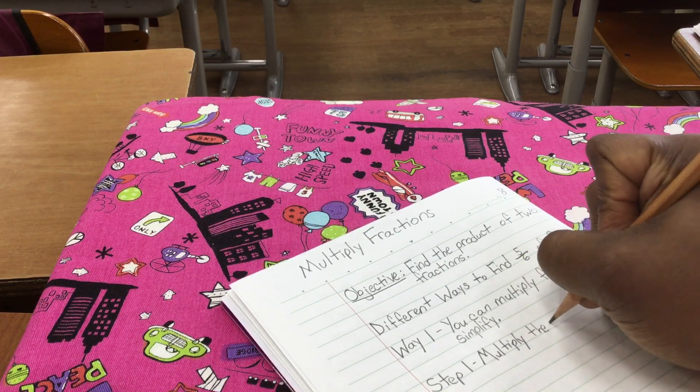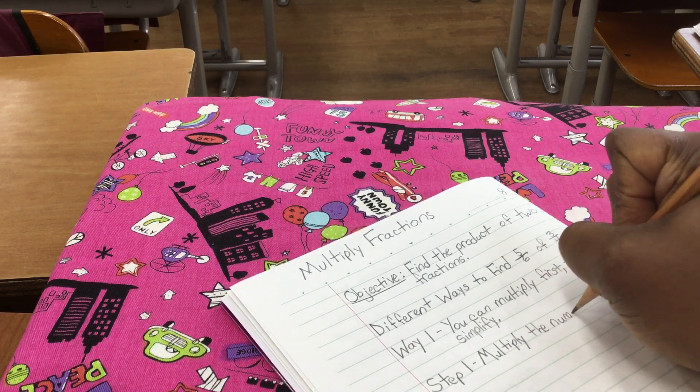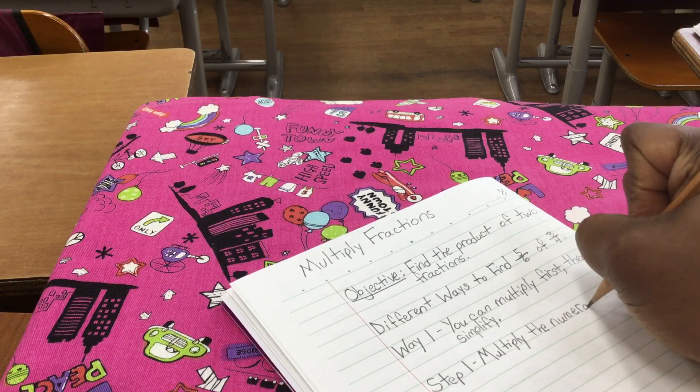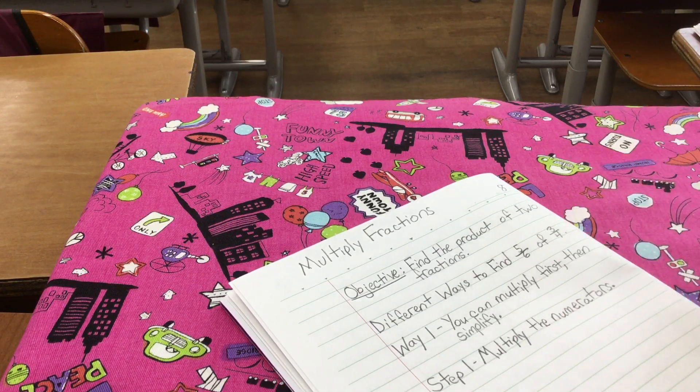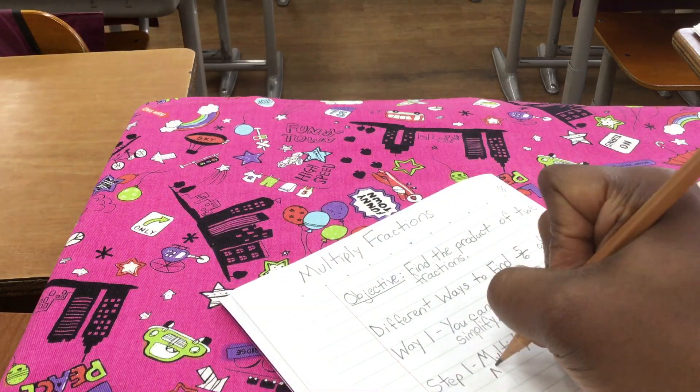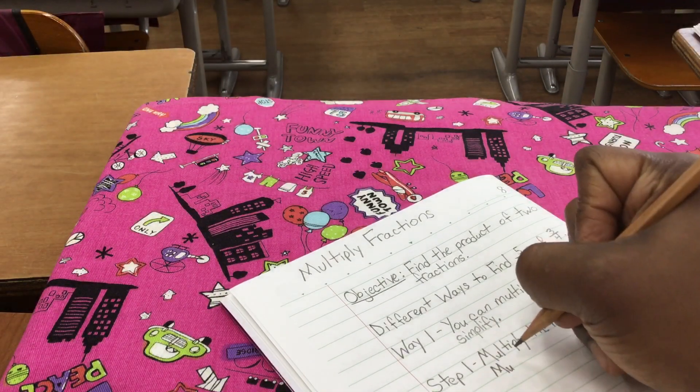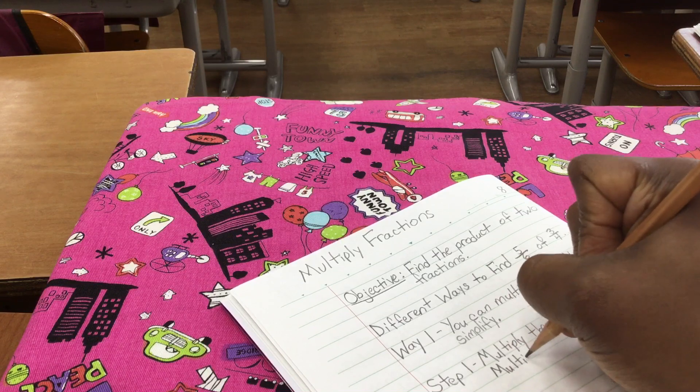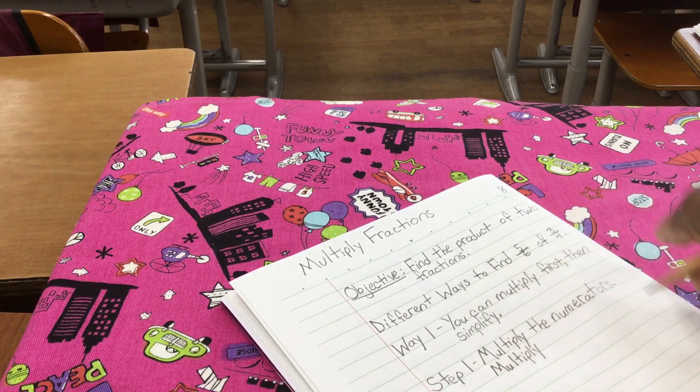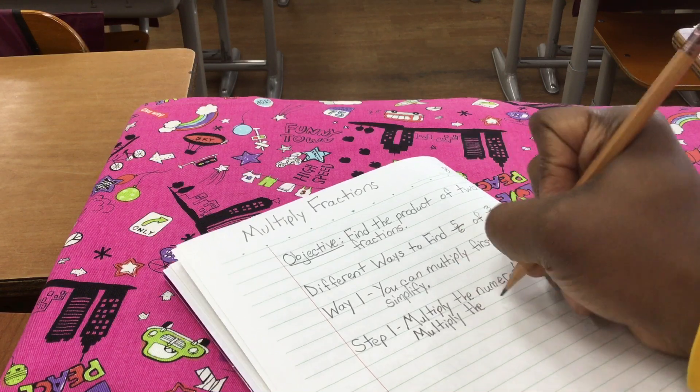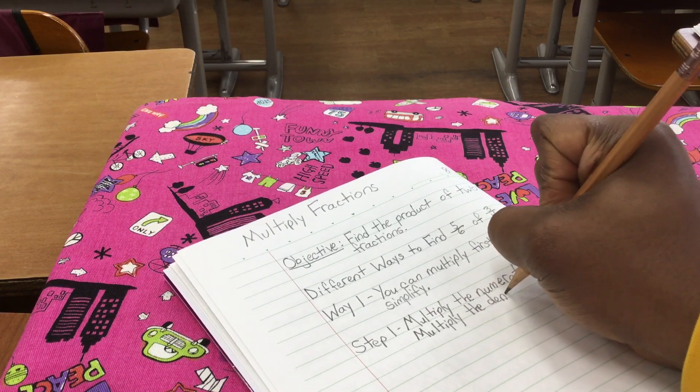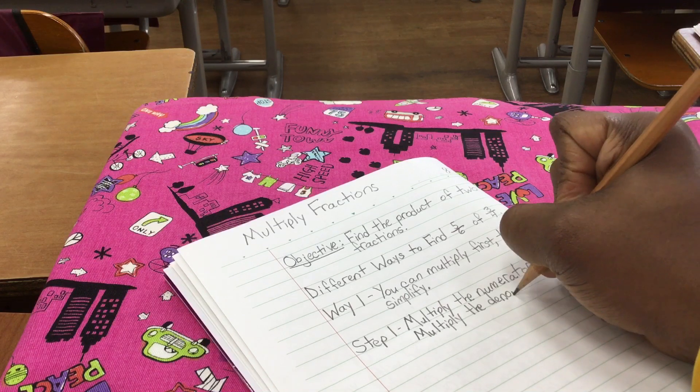You can multiply first, then simplify. Let's do it in steps. So we have step one. Then, you want to multiply the numerators. So remember, the numerators, that's the top number of the fraction, right? Multiply the numerators, and then you're going to multiply the denominators. That's the bottom number of the fraction, right?